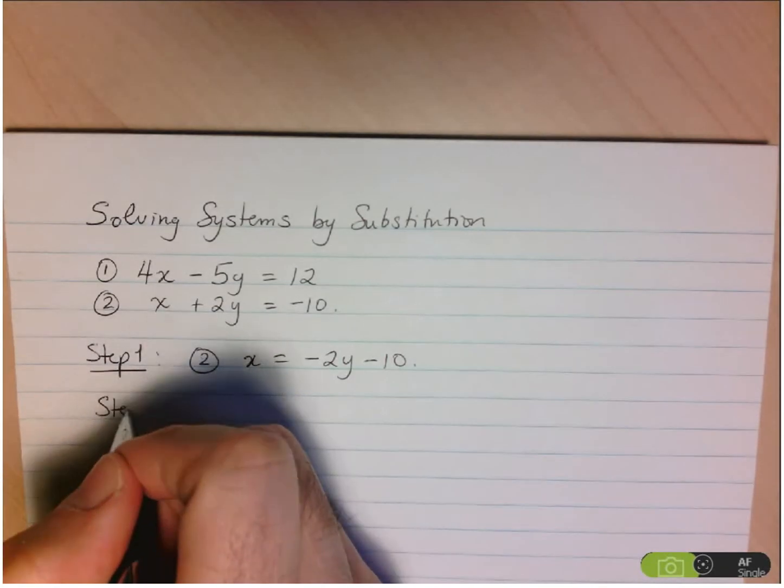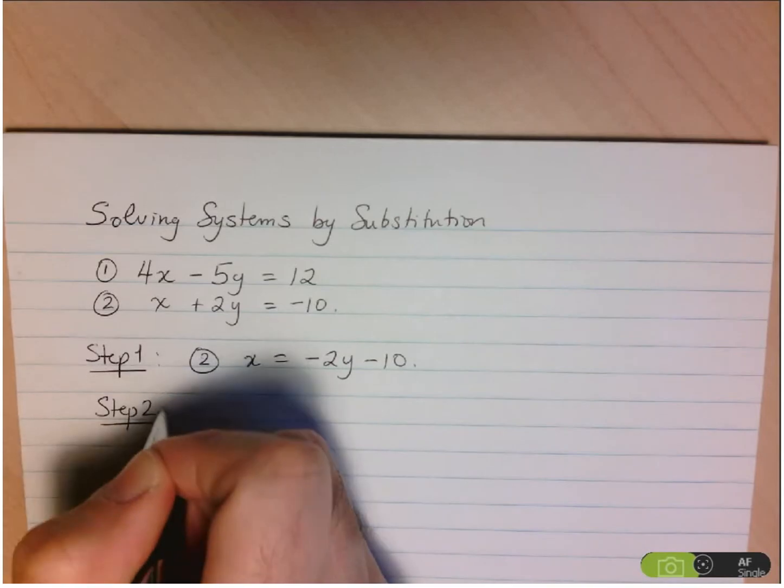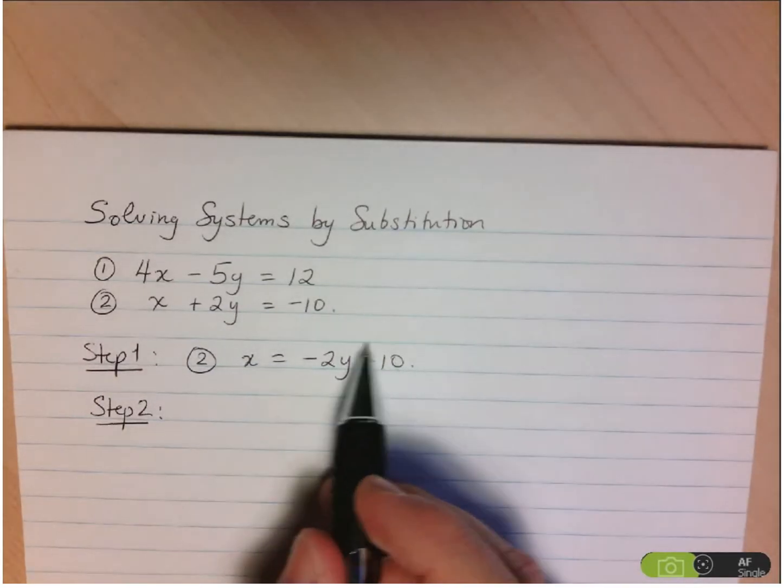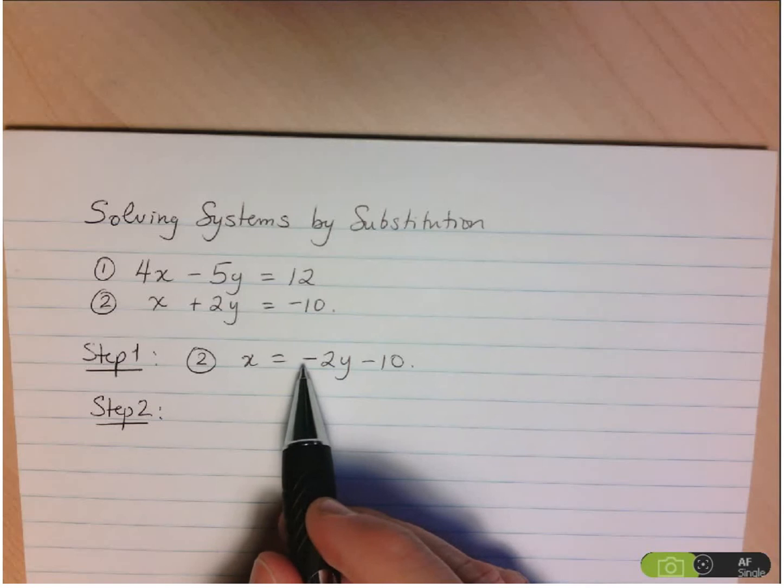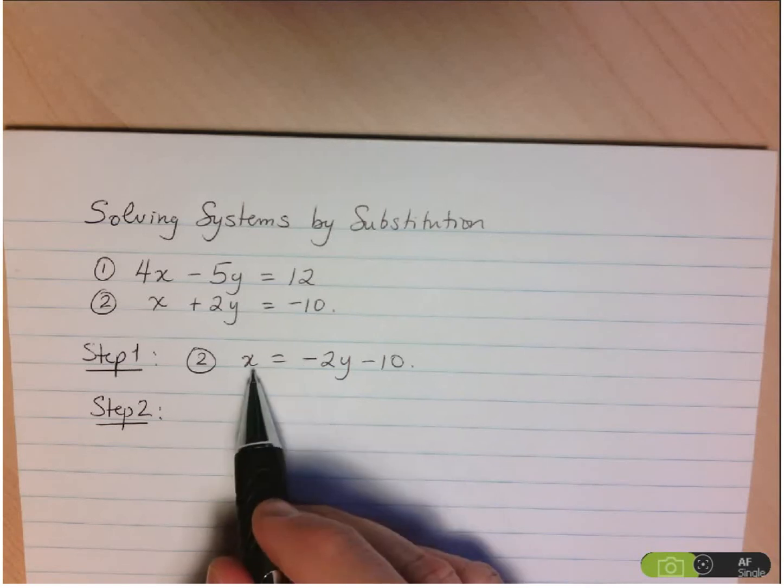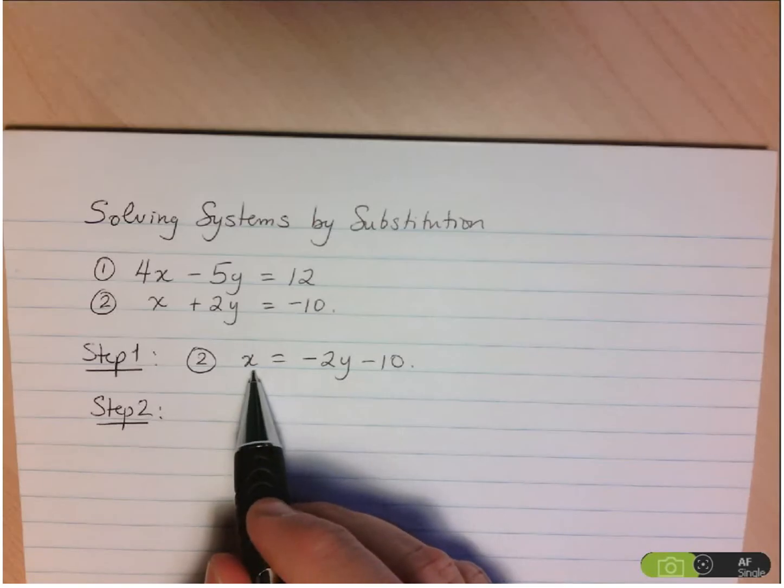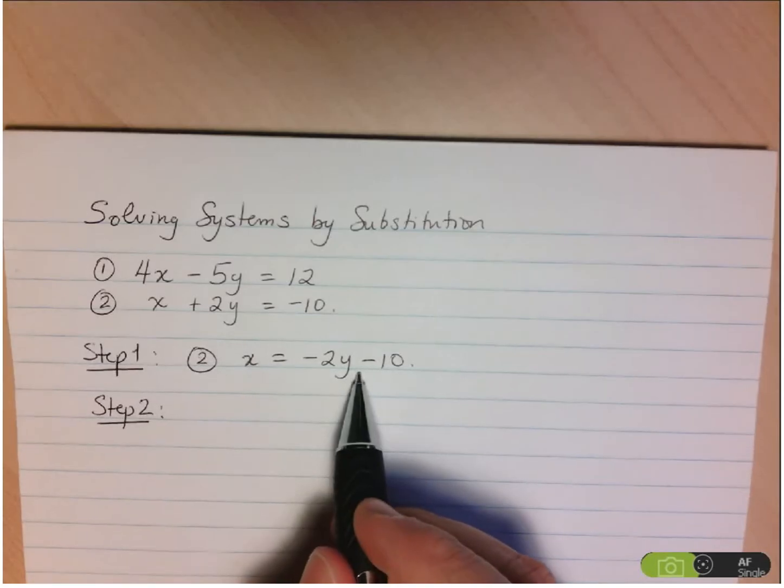Step 2, and this is where the title of the method comes into play, is we substitute this expression in the other equation where we see x. So x is equal to negative 2y minus 10. Hence, anywhere I see an x, I can now replace it with what it's equal to, which is negative 2y minus 10.